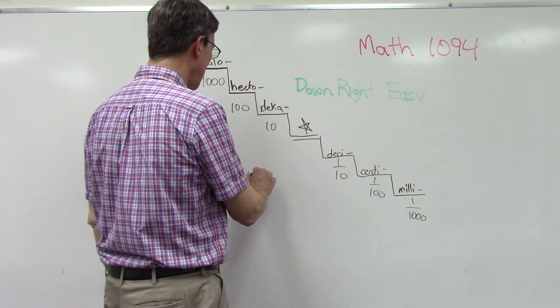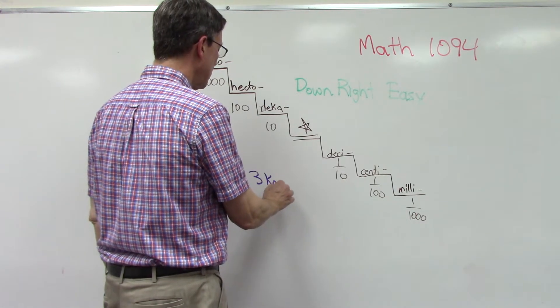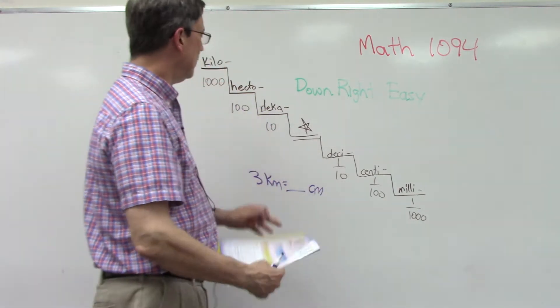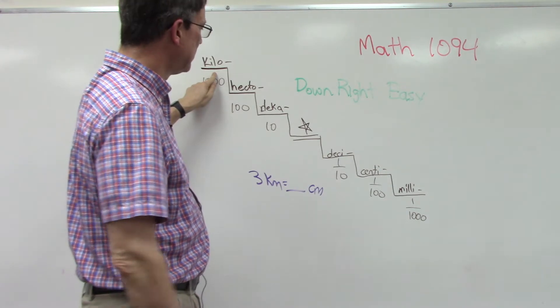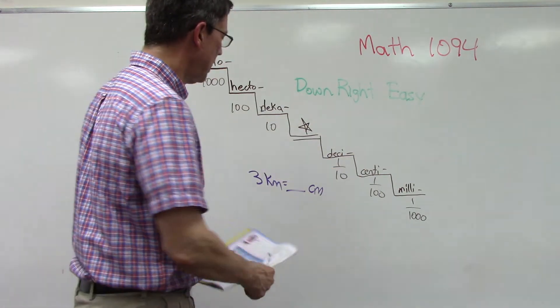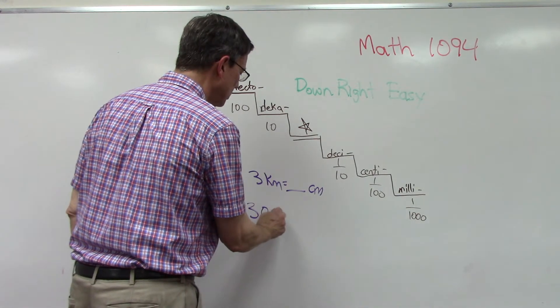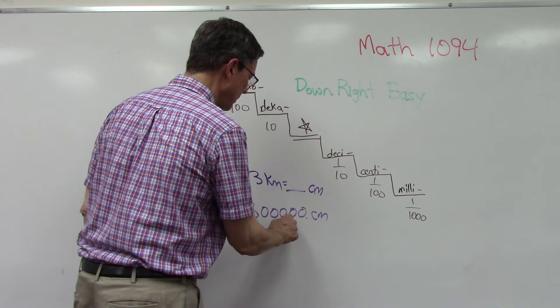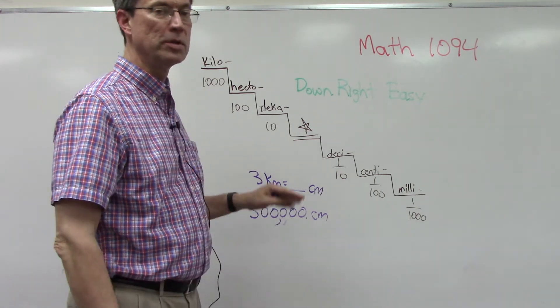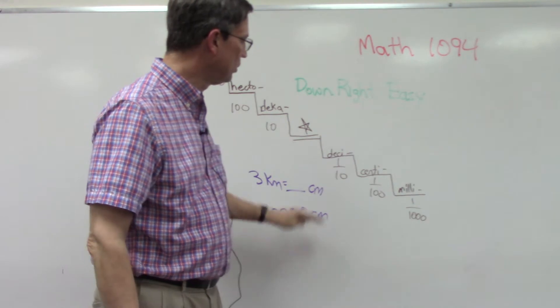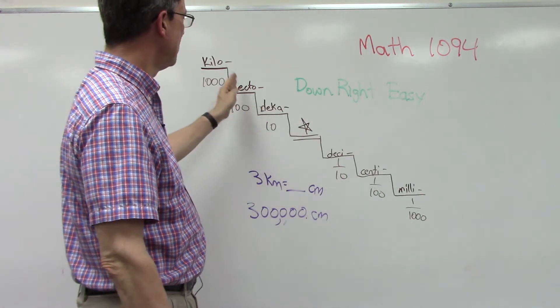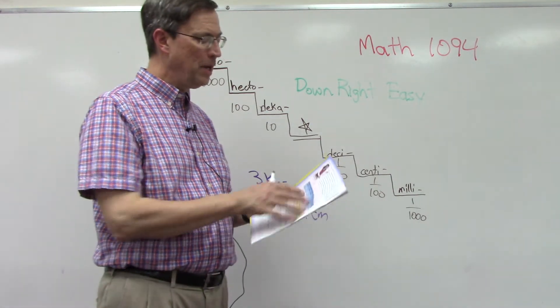Let me show you real quick. Let's say I had something that was three kilometers and I'm asked to find out how many centimeters is that. I would start here with the three and notice that I have to step one, two, three, four, five times to get to centimeters. So I would start with the three and move the decimal one, two, three, four, five times. I have 300,000 centimeters equal to three kilometers.